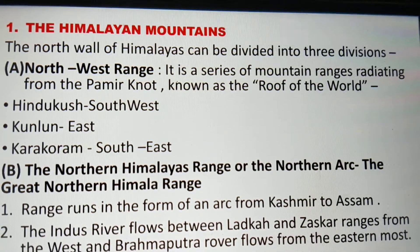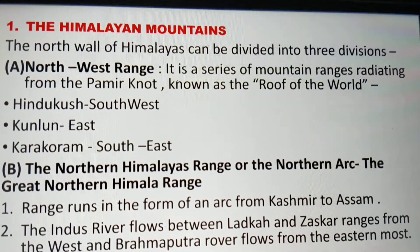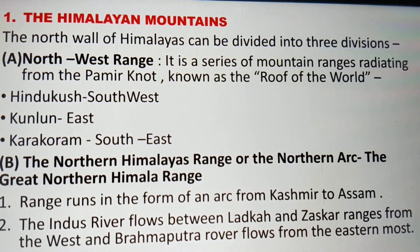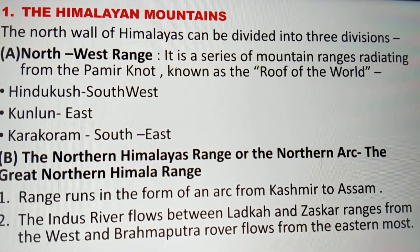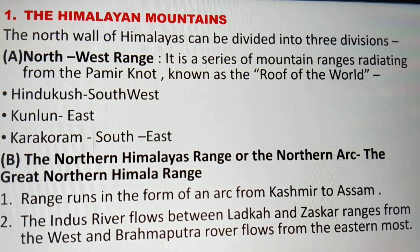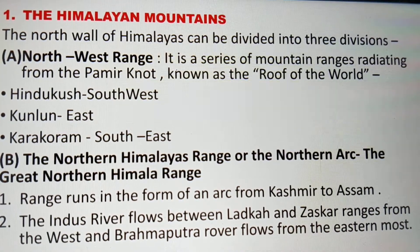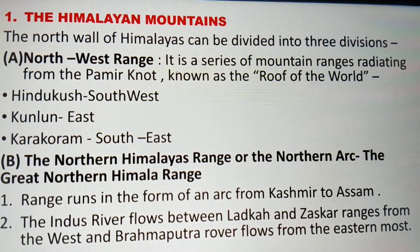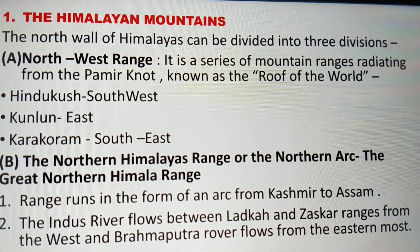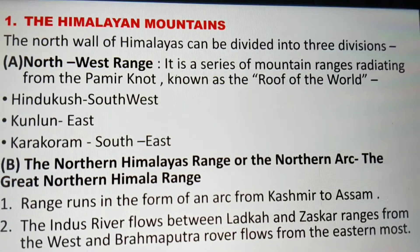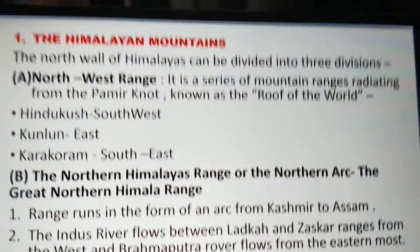The northwest range includes: first, Hindukush to the southwest; second, Kunlun; and third, Karakoram to the southeast. Next is the great northern Himalaya range, also called the northern arc. The range runs in the form of an arc from Kashmir to Assam. The Indus river flows between the Ladakh and Zaskar ranges from the west, and the Brahmaputra river flows from the eastern side, that is the Bay of Bengal side.